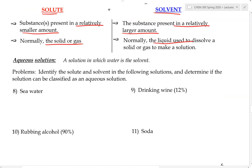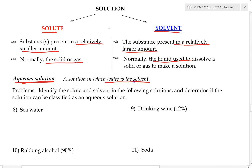An aqueous solution is a solution in which water is the solvent. So anytime the solvent is water, that will be called an aqueous solution. Please remember that definition — an aqueous solution is a solution in which water is the solvent.